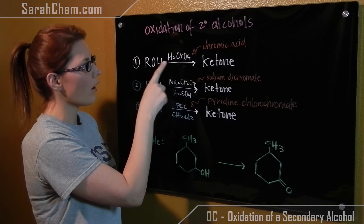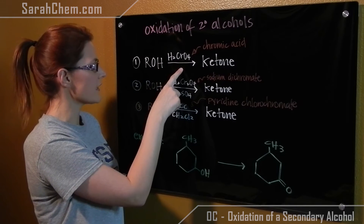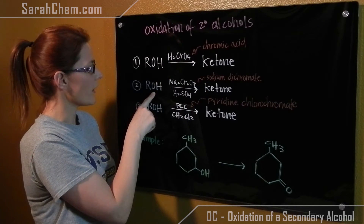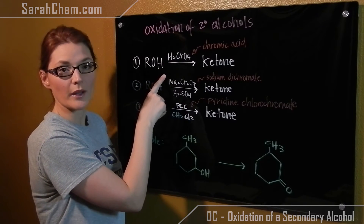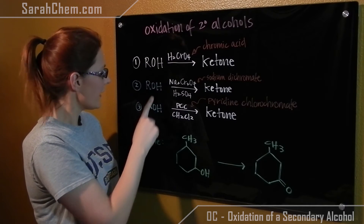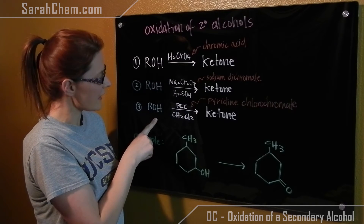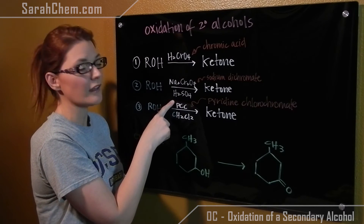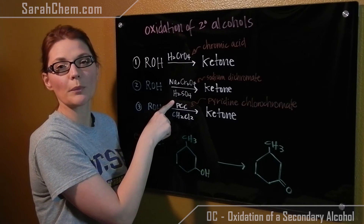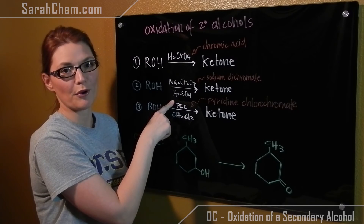In the first case, it's a secondary alcohol with chromic acid. Over here, it's a secondary alcohol with sodium dichromate. And in our last case, it's an alcohol with PCC, also called pyridine chlorochromate.